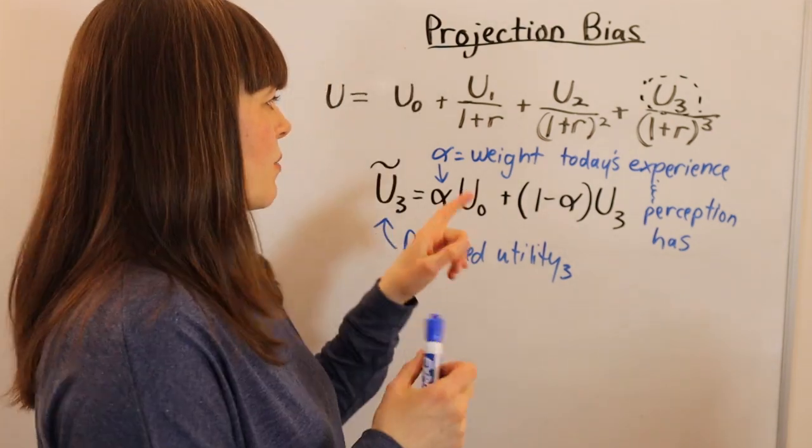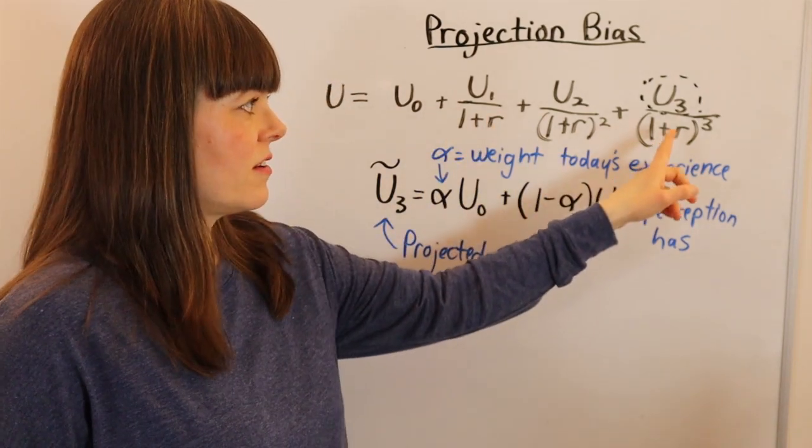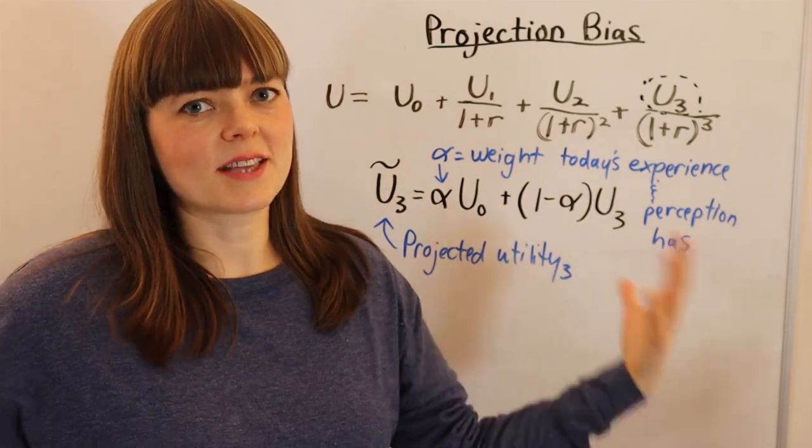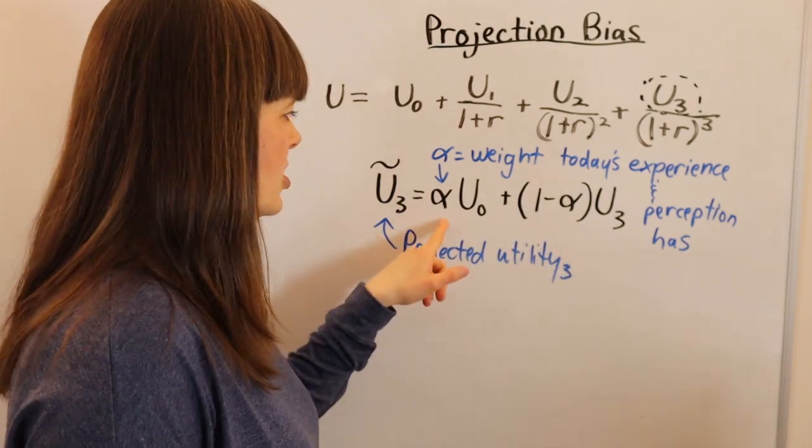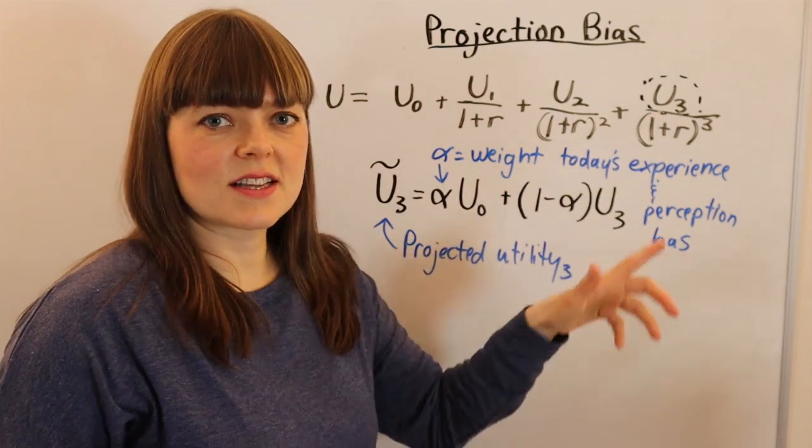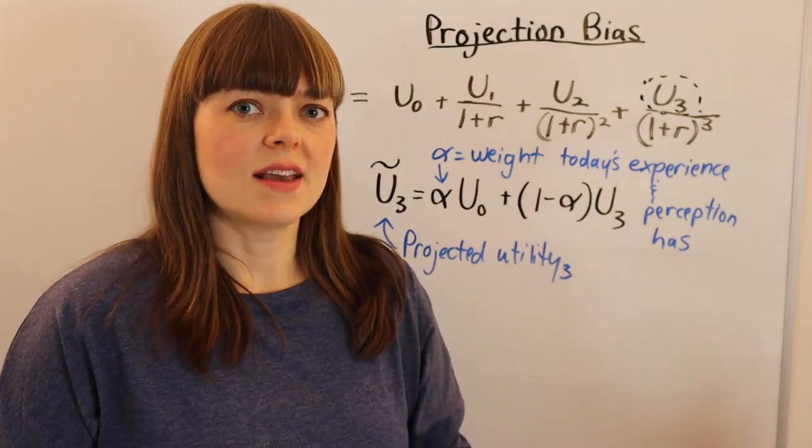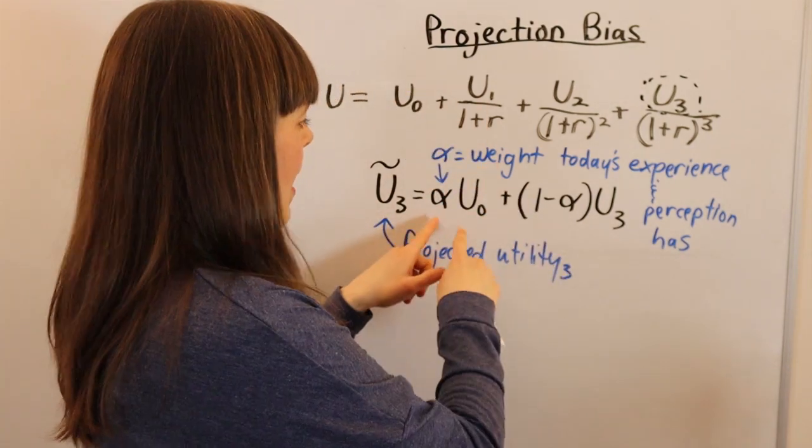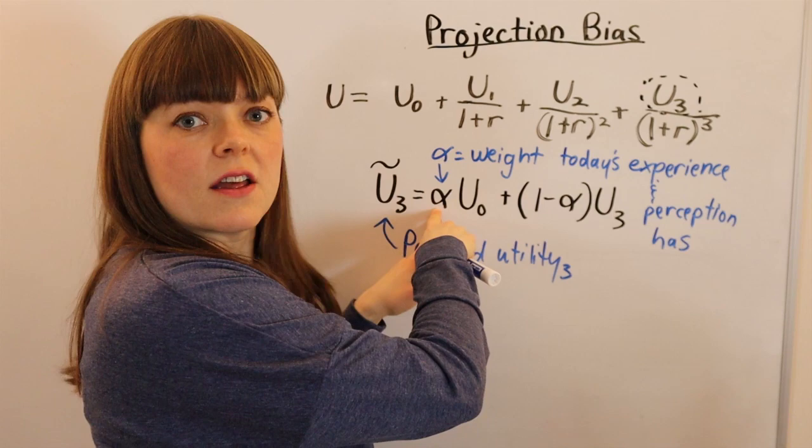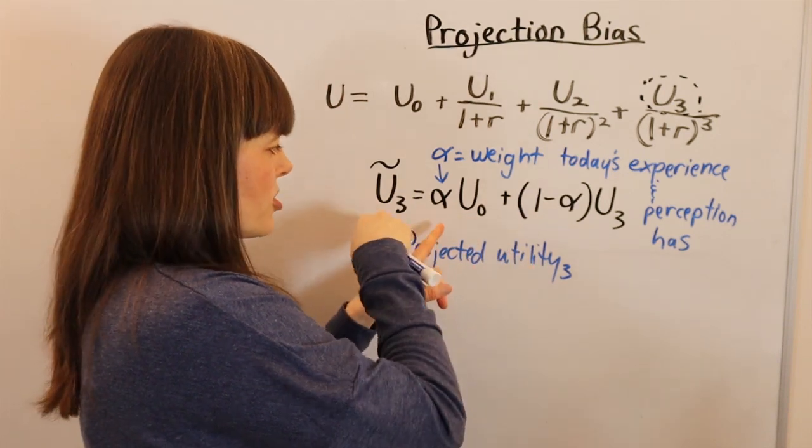Utility today is the teenager's experience when they first come out as gay. Utility in period 3 is a twenty-something's experience when they've been out for 10 years and their family and friends have come to support it. They're trying to project how happy they'll be in period 3. They should listen to everyone who says it gets better - it really does. All the negative stuff in high school won't persist throughout your life. People grow up. But it's hard to feel that when thinking forward to the future.